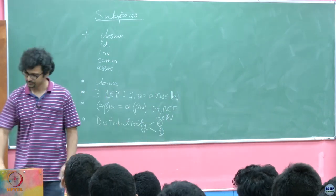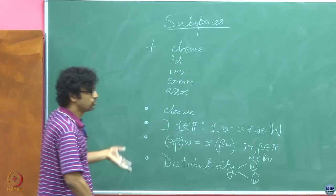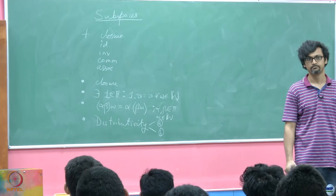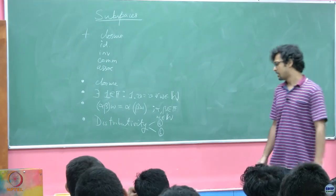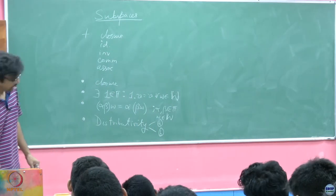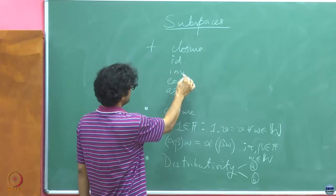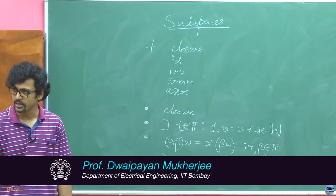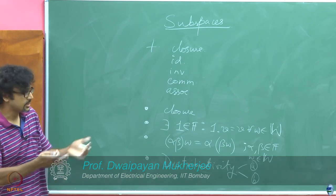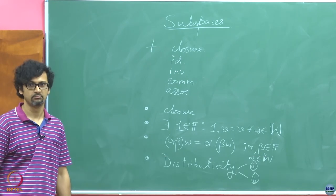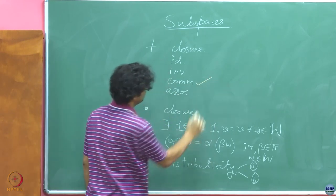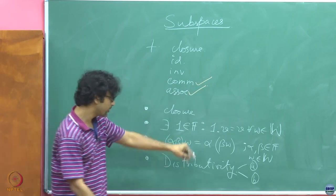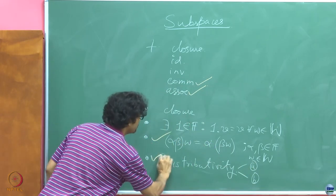You try to first check which properties do not depend on the set in question but rather on the operations themselves. If I do that, I would see that commutativity presumably has nothing to do with the set I have chosen — it is about the operation. So commutativity may not need to be checked. Same with associativity and distributivity.